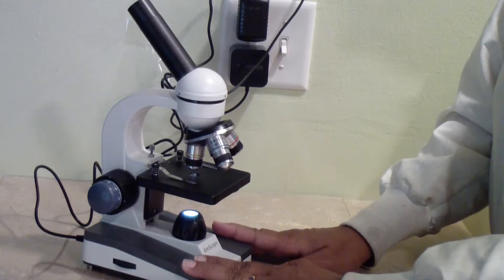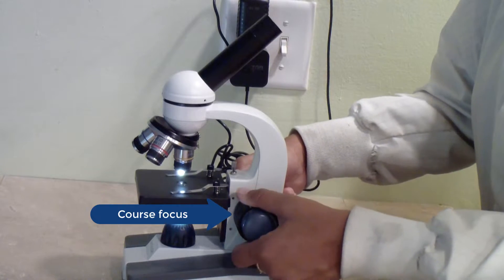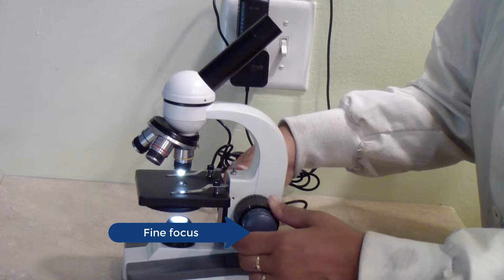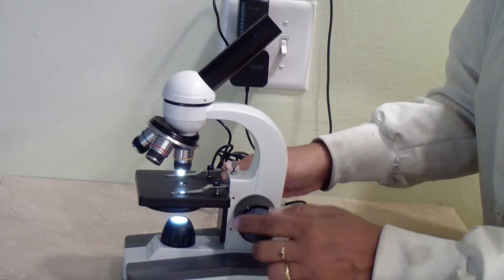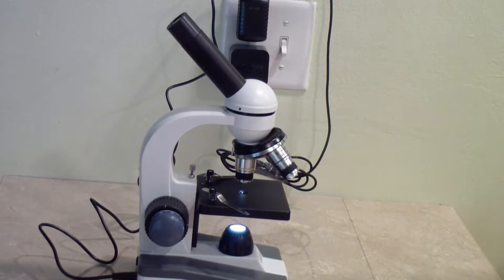This is called the base, and this is the stage. The bigger coarse focus knob moves the stage up and down, while the smaller fine focus knob moves it in smaller increments. There are two stage clips that are used to hold glass slides in place.